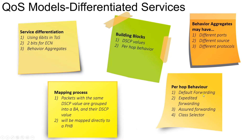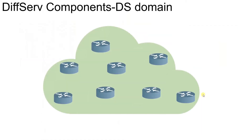In per-hop behavior there are four different models: the first is Default Forwarding (DF), the second is Expedited Forwarding (EF), the third is Assured Forwarding (AF), and the last one is Class Selector (CS).